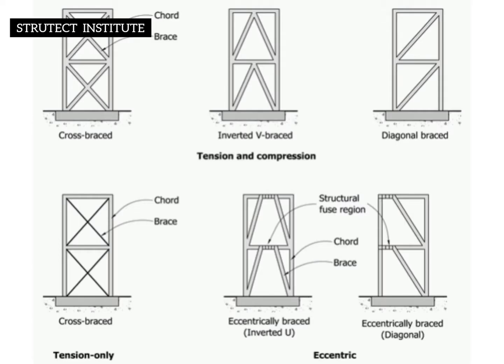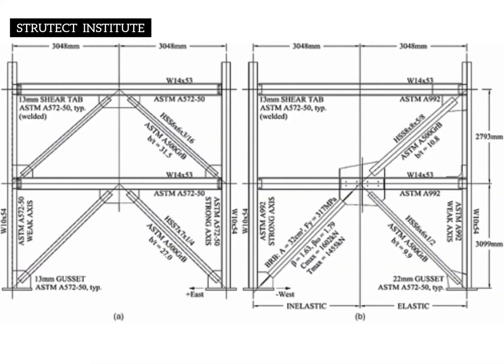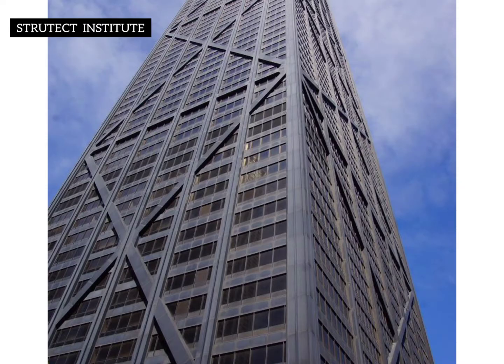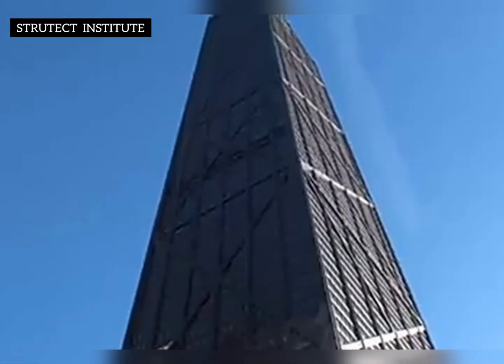Let's start with the Braced Frame Structure System. A braced frame is a structural system designed to resist wind and earthquake forces. Members in a braced frame are not allowed to sway laterally. One of the skyscrapers constructed using this system is the John Hancock Center in Chicago.